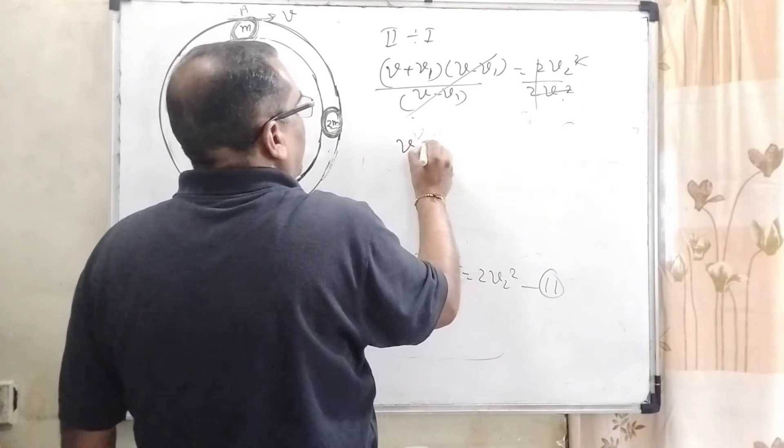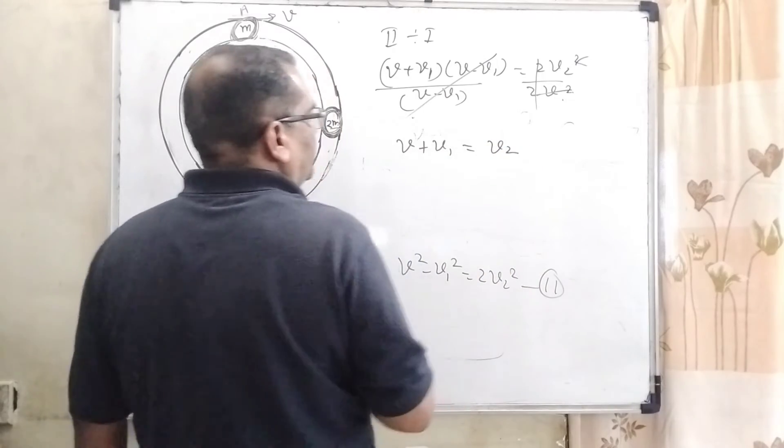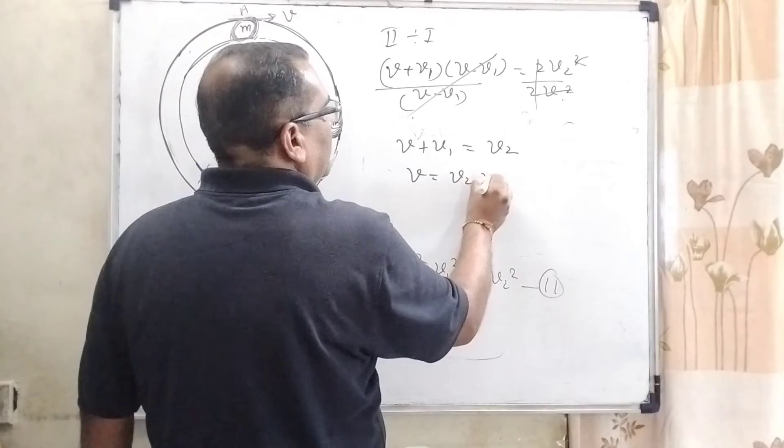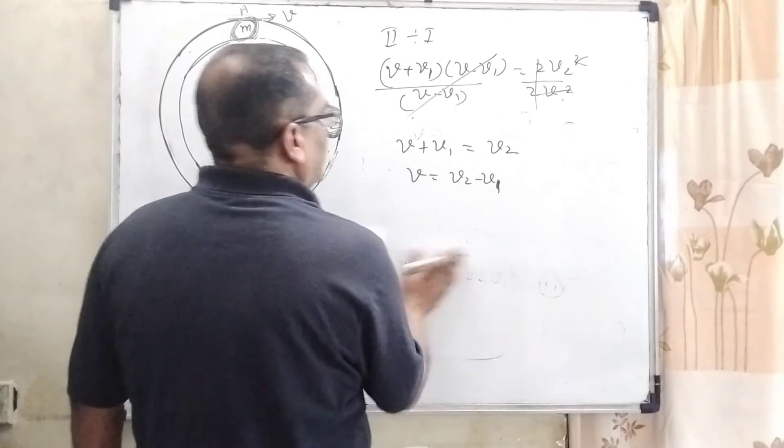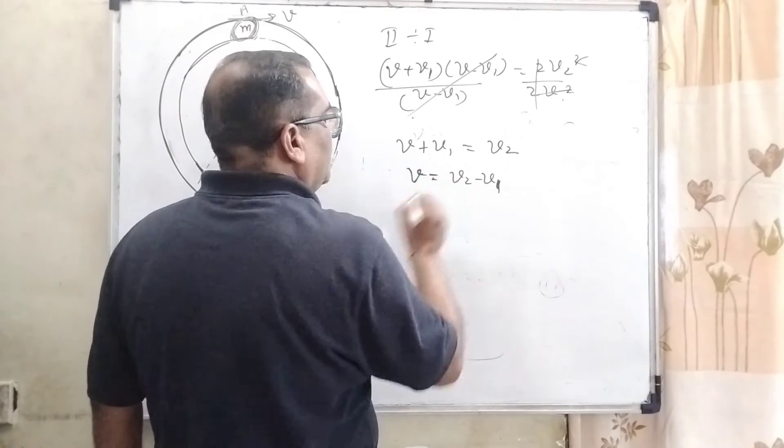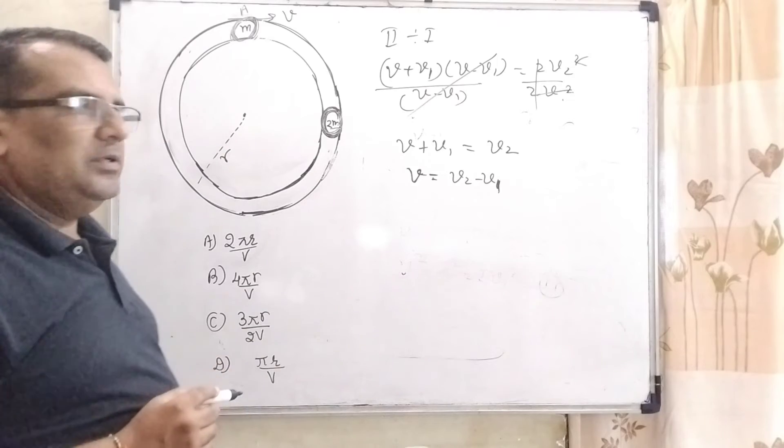So here we get v + v1 = v2, or it can be written as v = v2 - v1. So here we get after collision a relative velocity of this object that is v2 - v1.